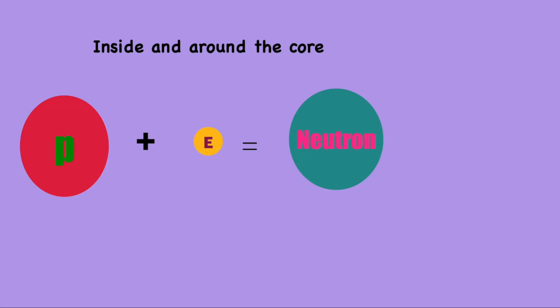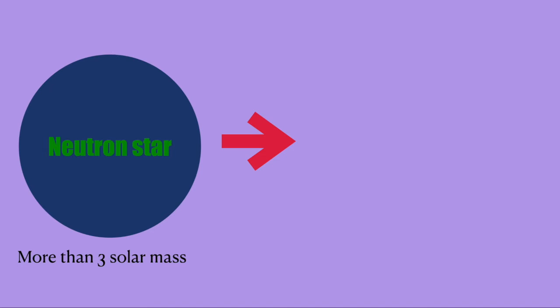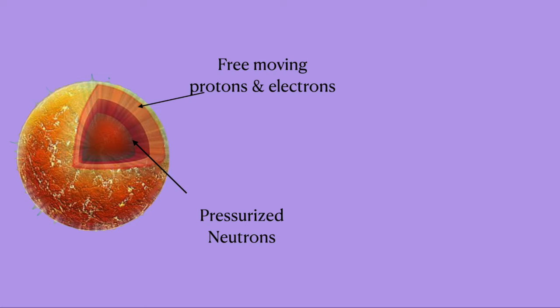If the mass of the neutron star crosses 3 solar mass, the gravitational force gets so high that it becomes a black hole, a hole in the fabric of space-time where time stops. The neutron star is not only composed of neutrons, but also has some protons and electrons above the surface which are electrically charged.